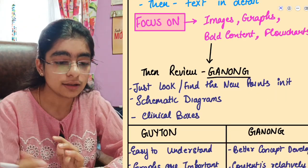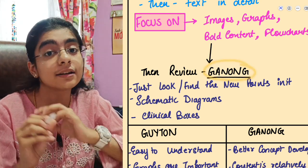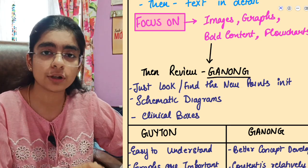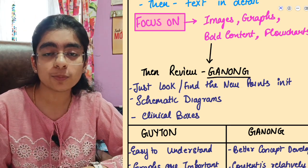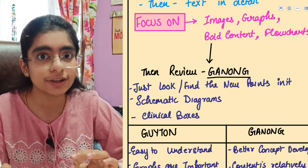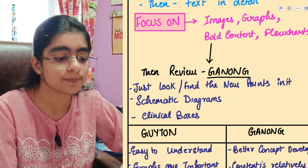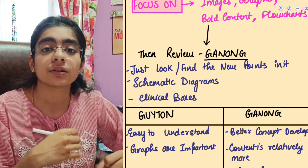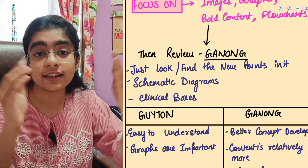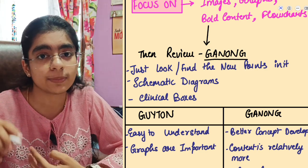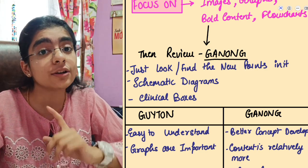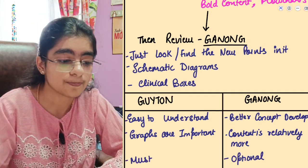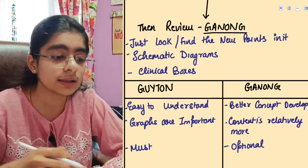Once you are done with Guyton, review Ganong. Ganong is a review book, so look for new points not covered in either the video or Guyton, and mark or add those to your notes. Go through all the schematic diagrams, flowcharts, and graphs in Ganong — each illustration is very important to build your concept. Physiology is the basis of many topics in second year and beyond.